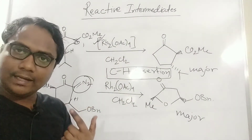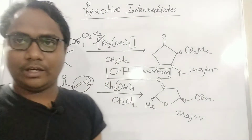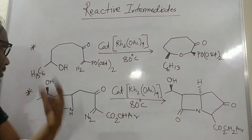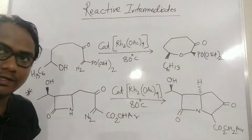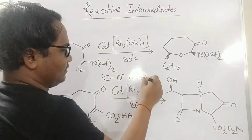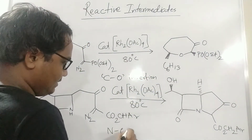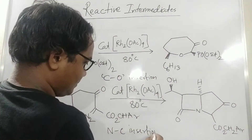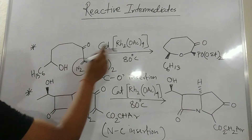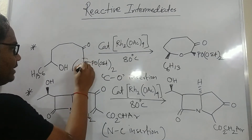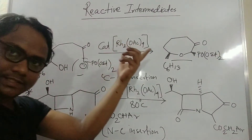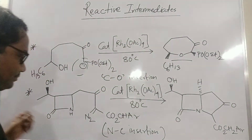This is the application of carbene chemistry — carbene generated by rhodium metal undergoes C–H insertion. The next two examples involve C–O insertion and N–C insertion. Here we have a diazo compound with an adjacent oxygen and hydrogen. In the presence of rhodium catalyst, carbene is generated and oxygen attacks, giving a C–O insertion product as the major product.